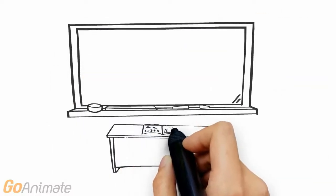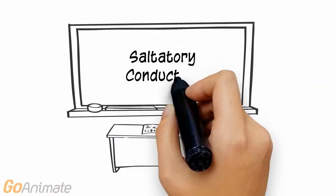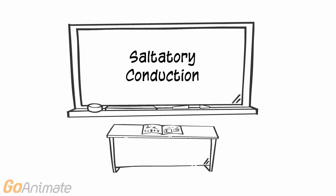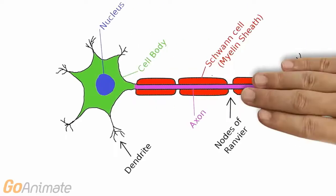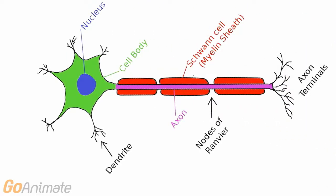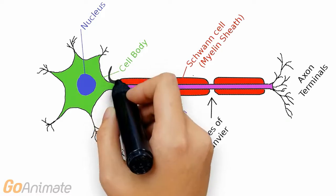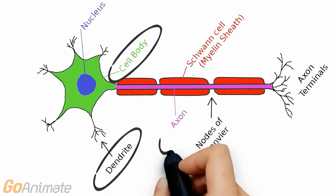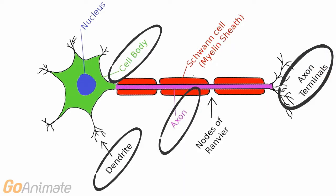Let's learn about saltatory conduction. Saltatory conduction is a process that occurs in neurons with myelinated axons. Myelin is what makes white matter white. Remember the parts of the neuron include the cell body, dendrites, axon, and axon terminal.